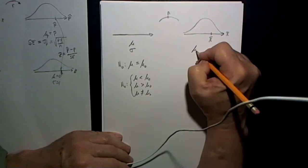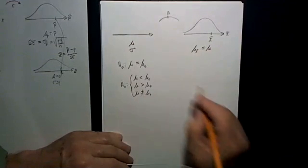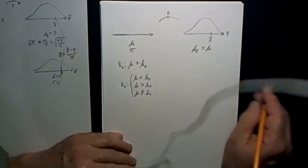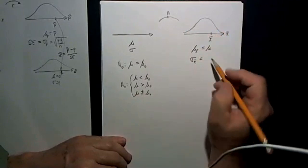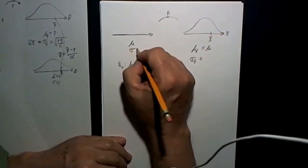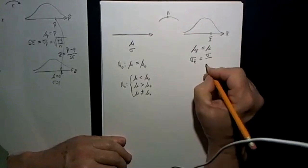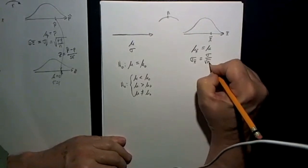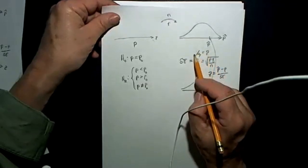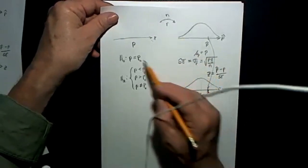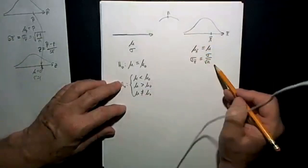The mean of that distribution — the mean of the sample means — is going to be equal to the mean of the original population, from the central limit theorem. The standard deviation of this distribution is going to be the standard deviation of the original population divided by the square root of n.